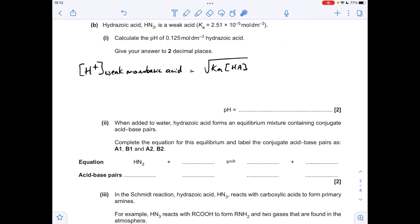Moving on to part B, the pH of HN3. We're told it's a weak monobasic acid. The H plus concentration of a weak monobasic acid is the square root of Ka times HA, where HA in square brackets means the original concentration of the acid. We're getting an H plus concentration of 1.77 times 10 to the minus 3 moles per decimeter cubed. Minus log that gives a pH of 2.75.